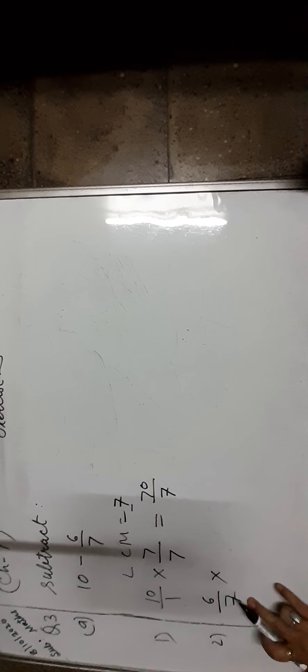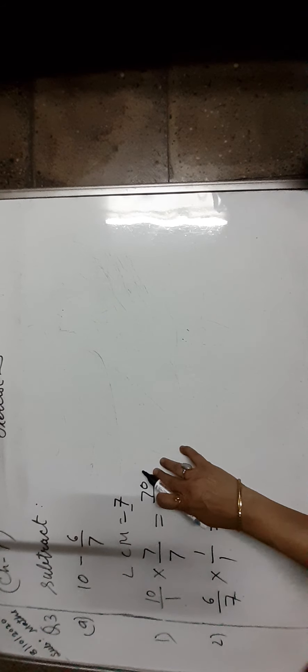Now let us take the other fraction that is 6 upon 7. How much do we multiply? In 7 to get 7 — it is 1 time. So both numerator and denominator are multiplied by 1, which is equal to 6 upon 7. Now subtract: 70 upon 7 minus 6 upon 7, which is equal to 70 minus 6 upon 7, which is equal to 64 upon 7. It should be written as 9 and 1 upon 7.